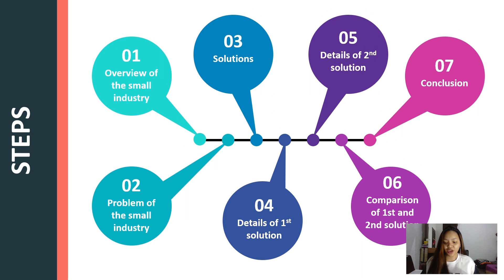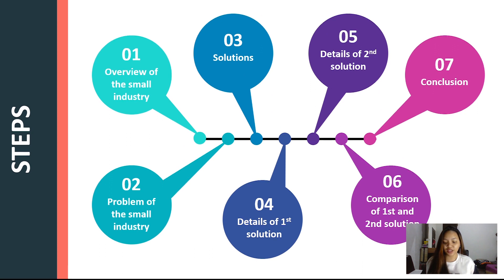From this slide, you can see there are 7 steps to identify a small industry, from the introduction of the small industry to the conclusion. First, I will describe the small industry. Second, I will present the problem. Then, I will give the detailed explanation of each solution. And lastly, I will give the comparison of each solution.